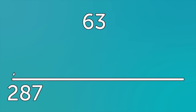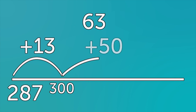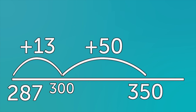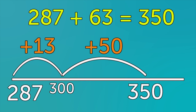Two hundred and eighty-seven to three hundred is thirteen more. Now you still have fifty more to add on, taking it to three hundred and fifty. Check you've added the correct amount on: sixty-three. Two hundred and eighty-seven plus sixty-three equals three hundred and fifty.